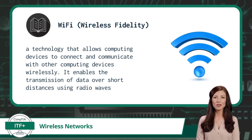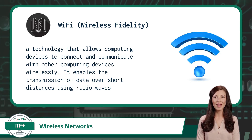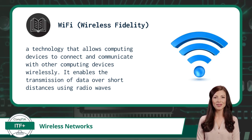To talk about wireless networks, we need to first talk about Wi-Fi. Wi-Fi, short for wireless fidelity, is a technology that allows computing devices to connect to and communicate with other computing devices wirelessly. It enables the transmission of data over short distances using radio waves, typically within a home, small office, or public space, by connecting to a wireless access point.